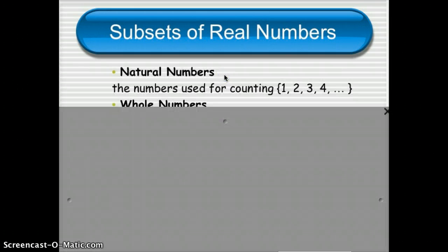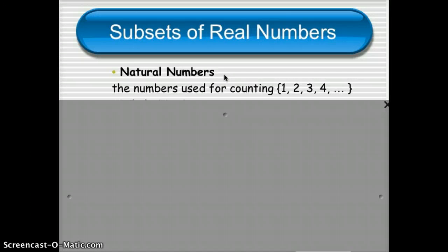Our first type of number is called natural numbers. Natural numbers are numbers that you have probably known since you were about two years old. Those are the numbers used for counting: 1, 2, 3, 4, 5, etc. Those are all called natural numbers.